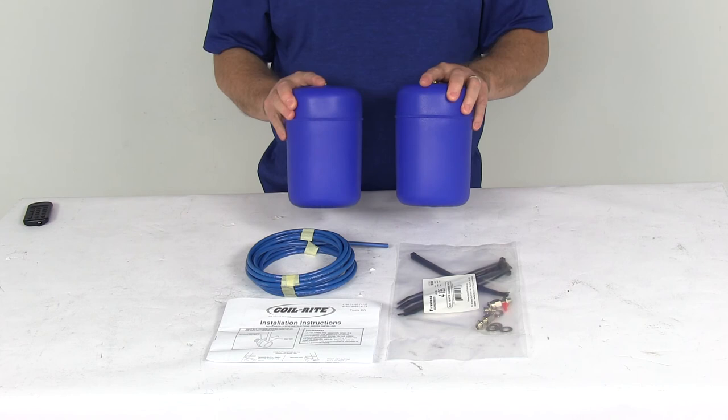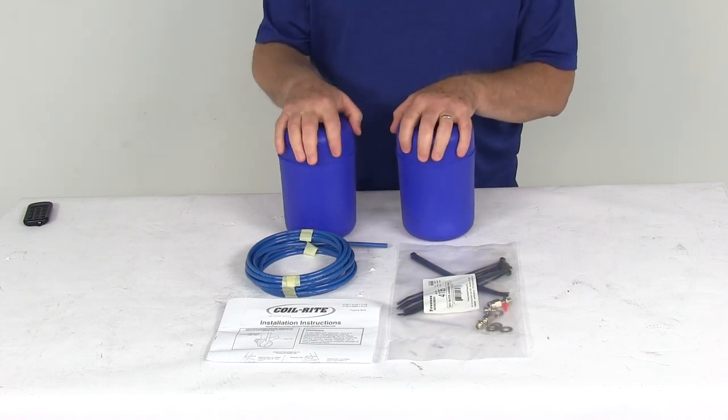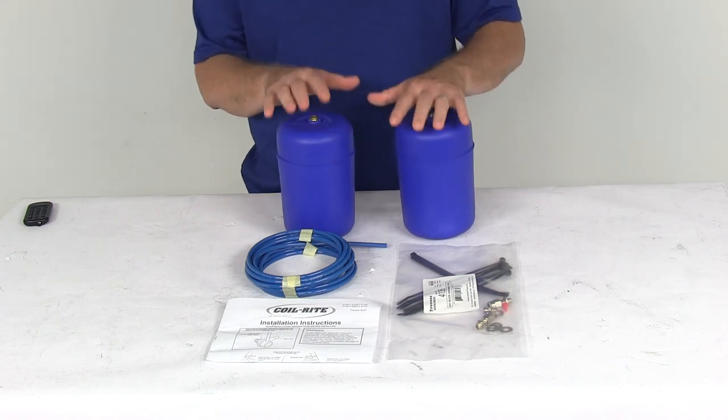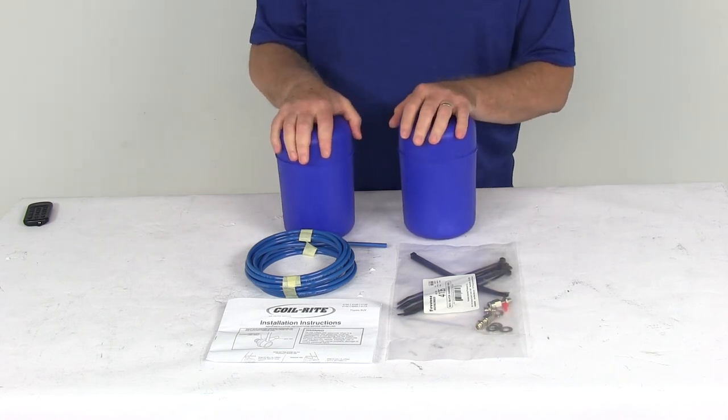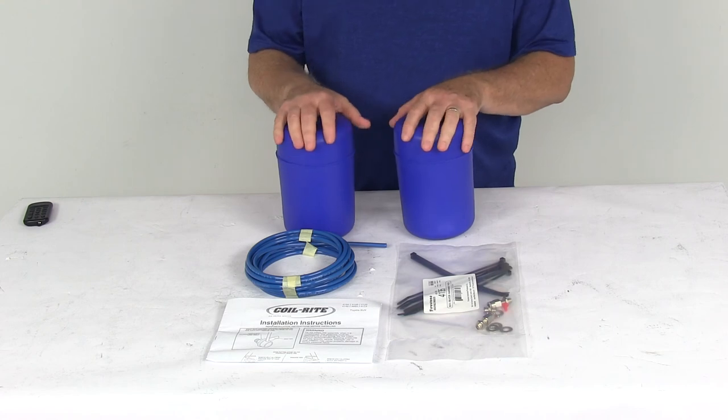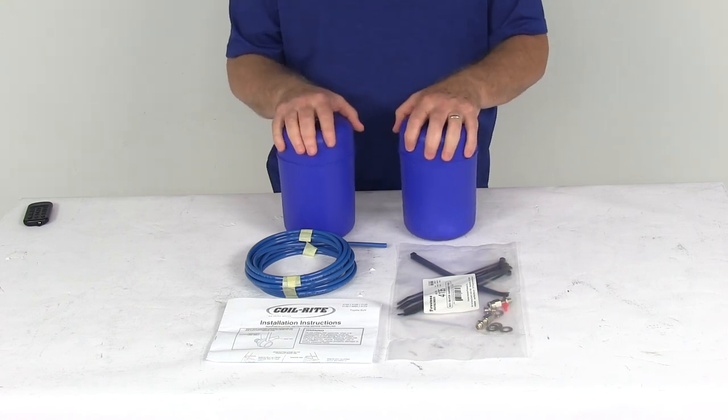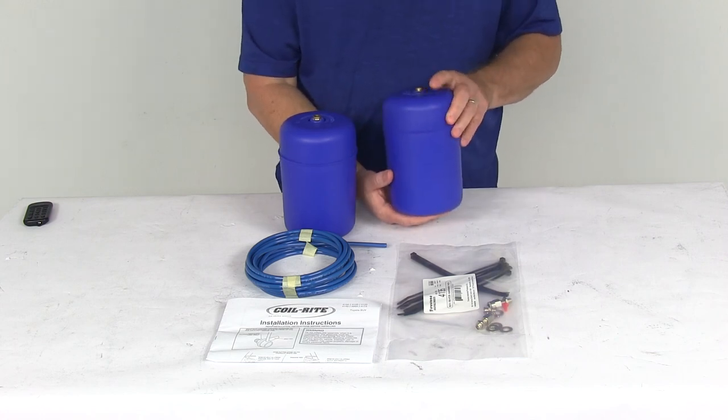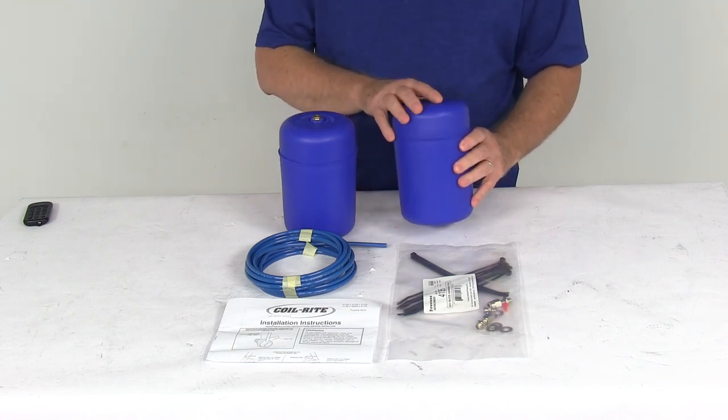These parts are made in the USA. The load leveling capacity is 500 to 1,000 pounds maximum. These Coil-Rite springs will not increase your vehicle's weight carrying capacity, so make sure not to exceed the manufacturer's recommended weight limit. Air pressure is adjustable from 5 PSI up to 35 PSI.